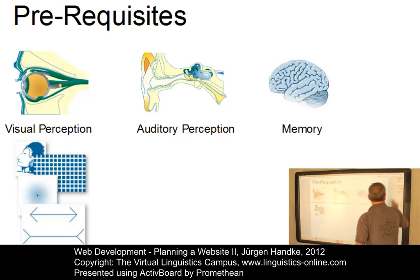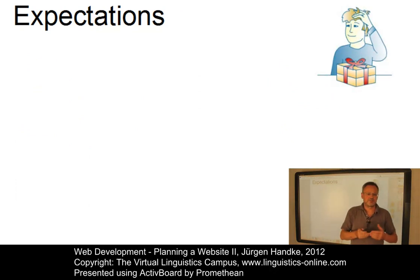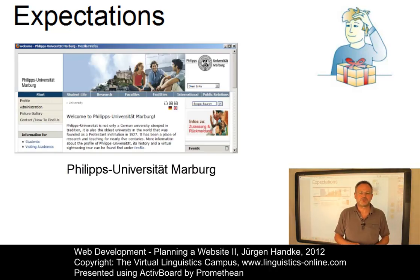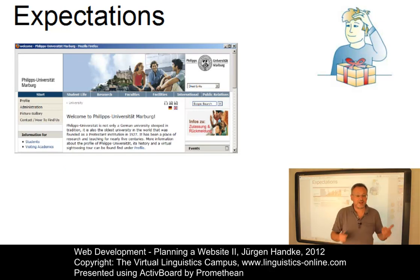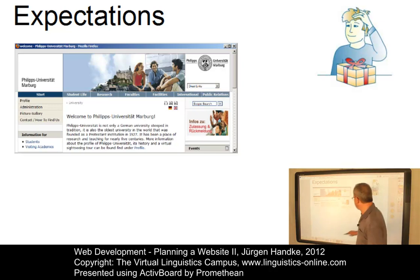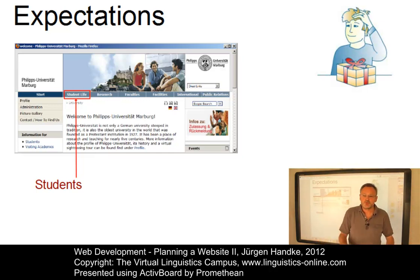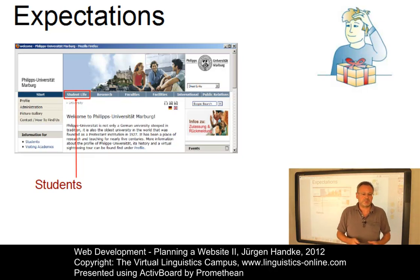Let's look at the general expectations a user might have. Different groups of users will, of course, have different expectations from your website. Take, for example, a university homepage. Students who want to start their studies at this university might want to find out more about the university itself. They're interested in portions of the website such as the latest news of their departments, when their next assignments will be due, and maybe the date of an upcoming party.